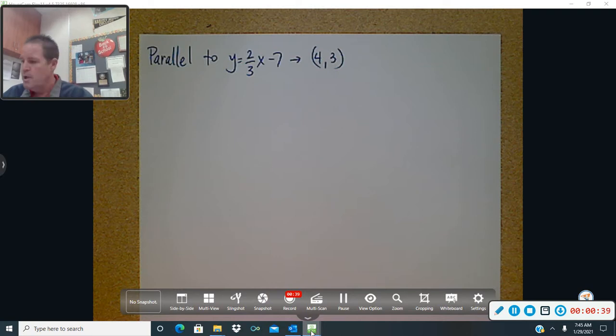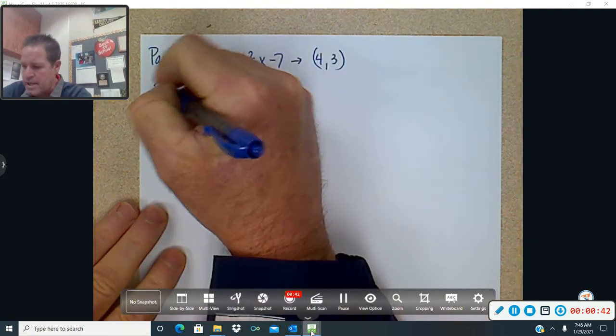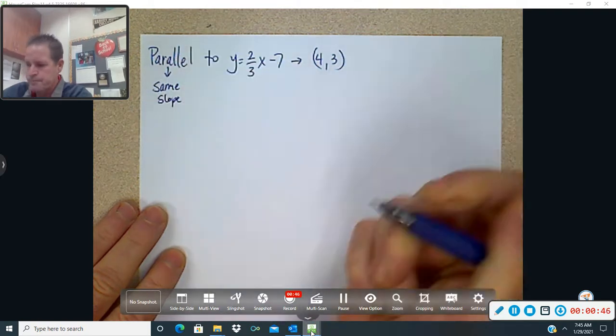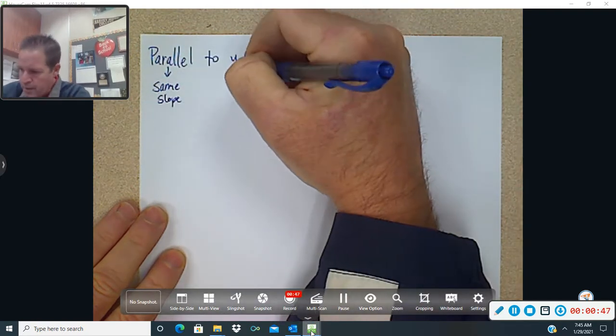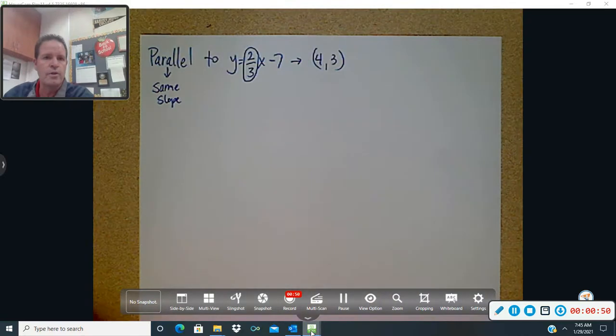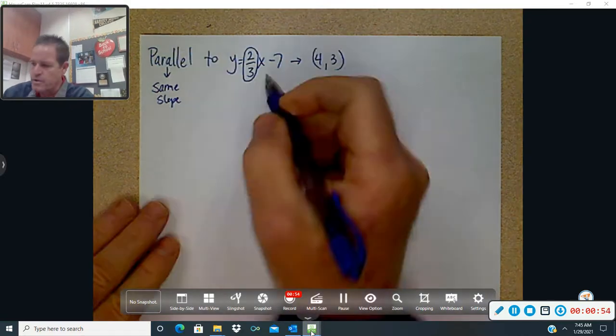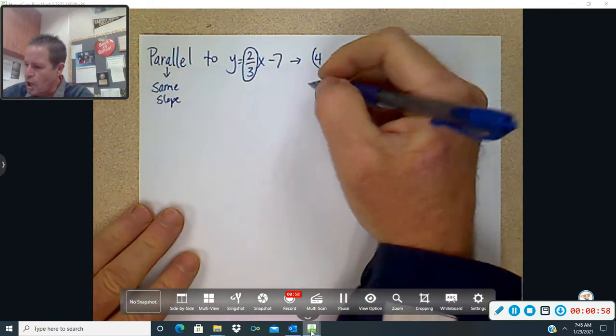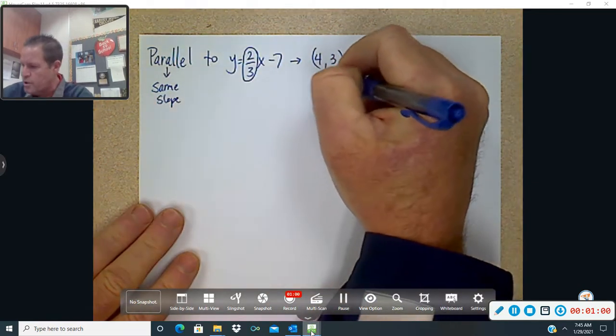All right, so what we need to know about parallel is parallel means same slope. Okay, so the slope here is 2 thirds. Remember, the slope is the number in front of x. When it's in slope intercept form, it's the number in front of x written as a fraction. So the slope you're going to use here is 2 thirds.